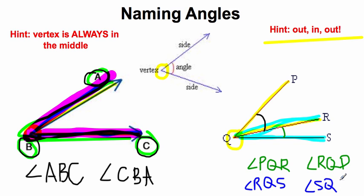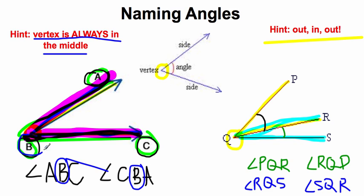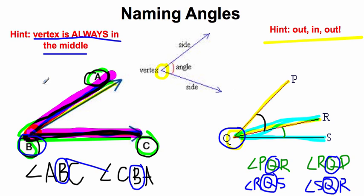The vertex is always in the middle. When naming angles, we see that B is always in the middle and that is our vertex. Looking over here, Q is always in the middle, and Q is the vertex of these angles. That's how you know if you're naming angles correctly — if the vertex, the point where the two sides meet, is sitting in the middle of your angle name.